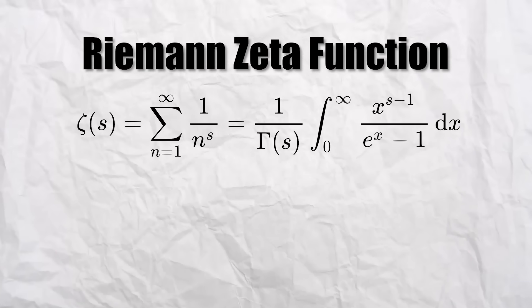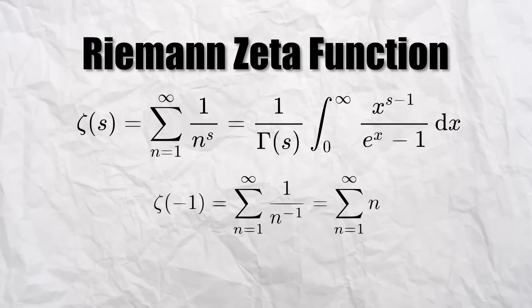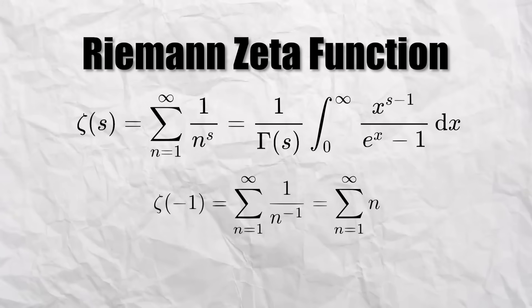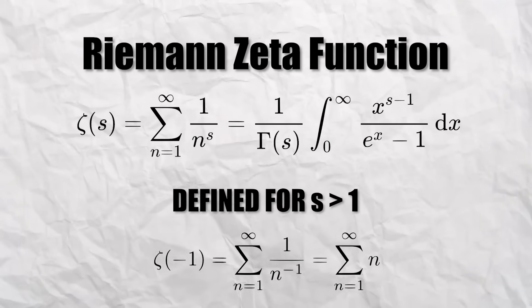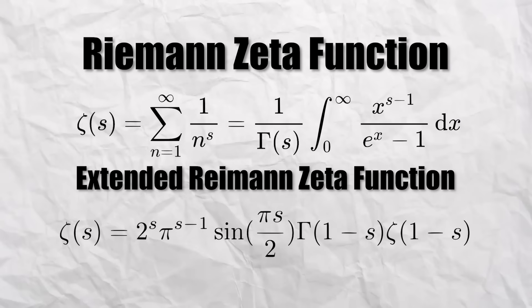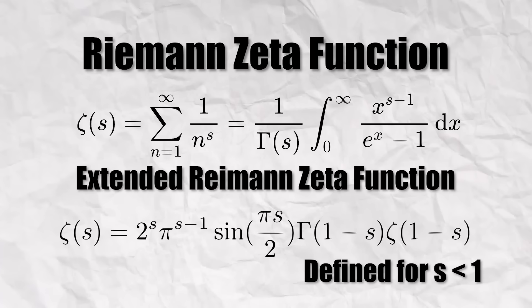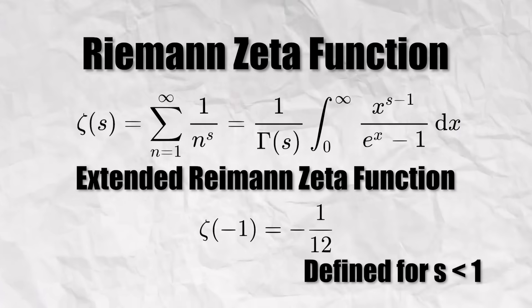You see, when using the Riemann-Zeta function, we can sum over the natural reciprocals. This means that by substituting in the value S equals negative 1, we get the sum of all the natural numbers. But this function is only defined for values greater than 1, so Riemann used analytic continuation to find a function which agrees with the Zeta function for values greater than 1, but also includes values less than 1. By plugging negative 1 into this, we get the result negative 1 on 12.